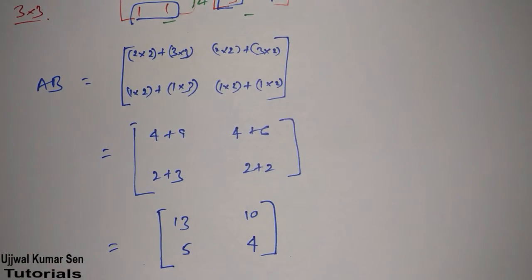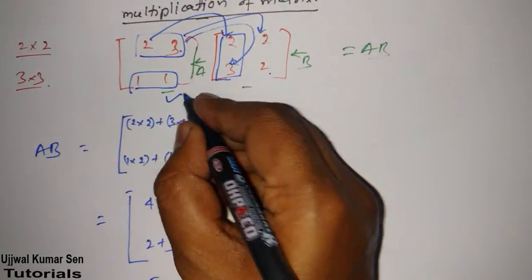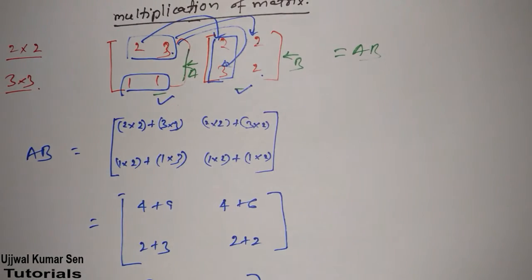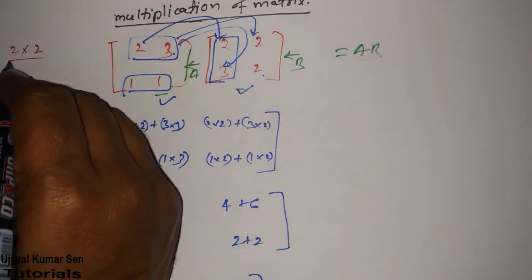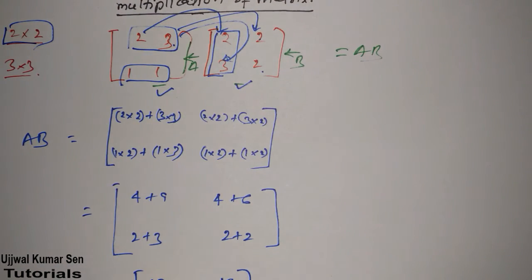So, this is a product of these two matrices, matrix A and matrix B. That means, multiplication of these two matrices. So, this is the process for multiplication of 2 by 2 matrix.